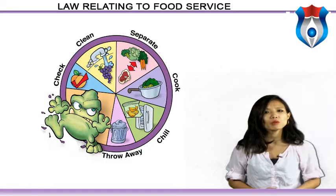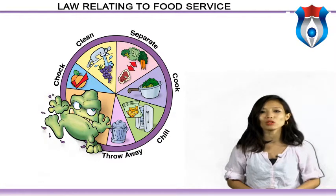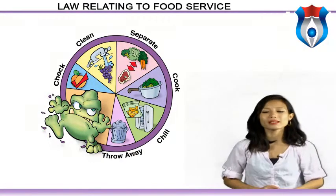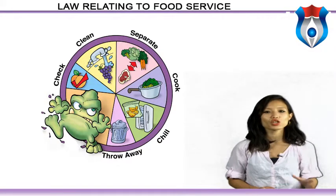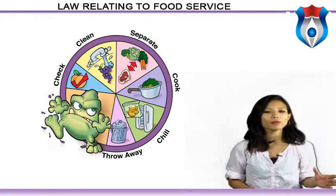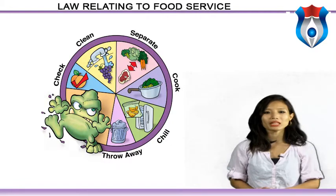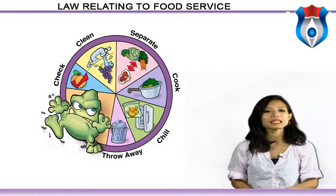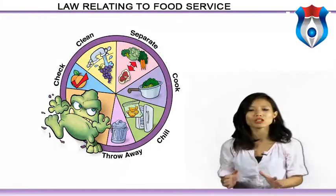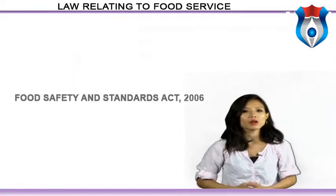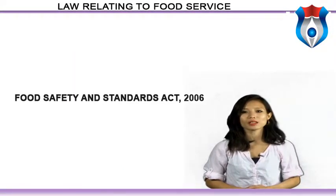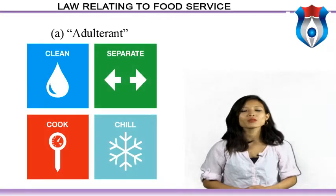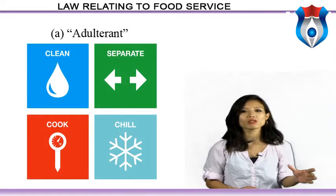Almost all foods are of plant or animal origin. Cereal grain is a staple food that provides more food energy worldwide than any other type of crop. Maize, wheat and rice, in all of their varieties, account for 87 percent of all grain production worldwide. Let us now discuss the Food Safety and Standards Act 2006.